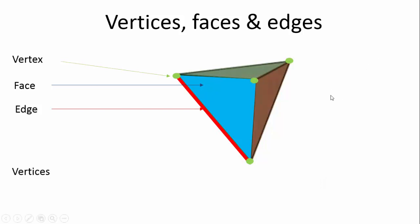The plural of vertex is vertices and we will have a couple of vertices here. Now it is very important how many vertices we have. This is a tetrahedron — your triangular pyramid. So we can see three faces here, but there is also a face on the bottom. Don't forget that. So here we have four vertices.